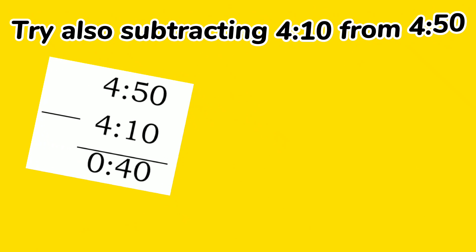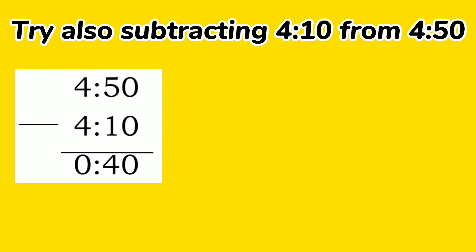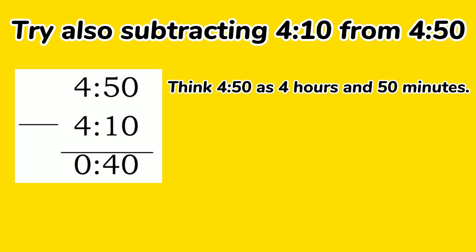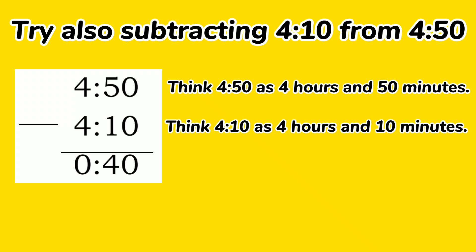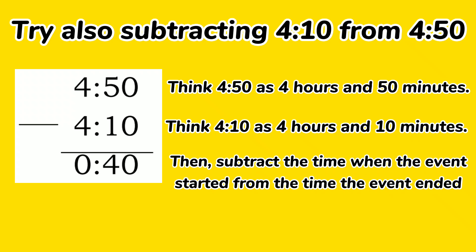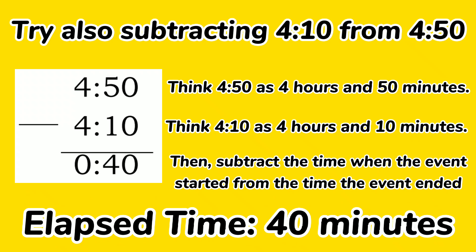You can also try subtracting 4:10 from 4:50. Think of 4:50 as 4 hours and 50 minutes, and 4:10 as 4 hours and 10 minutes. Then subtract the time when the event started from the time the event ended. 0 minus 0 is 0, 5 minus 1 is 4, and 4 minus 4 is 0. So the elapsed time is 40 minutes.